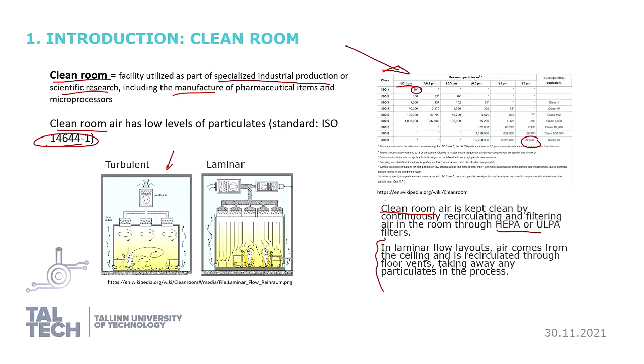Turbulent clean rooms also exist, but I have only encountered so far laminar setups, where the air is coming from vents in the ceiling and goes down with laminar flow to vents in the floor. And then they are recirculated in the supporting unit or the air system of the clean room adjacent to it, and this is filtered through industrial grade filters.